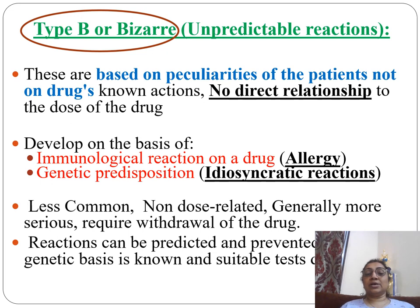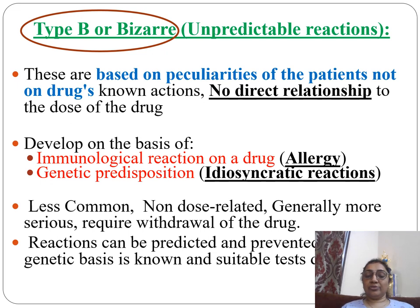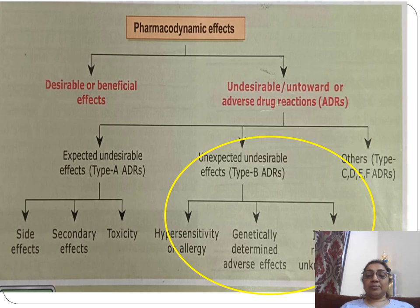Type B, or bizarre, unpredictable reactions are based on peculiarities of the patient, not the drug action. There is no direct relationship to the dose of the drug. They develop on the basis of immunological reactions, such as allergy, and genetic predisposition. These reactions are less common, non-dose related, generally more serious, and require withdrawal of the drug. They can be predicted and prevented if the genetic basis is known and suitable tests are available. Type B includes hypersensitivity reactions, genetically determined adverse drug reactions, and idiosyncrasy.